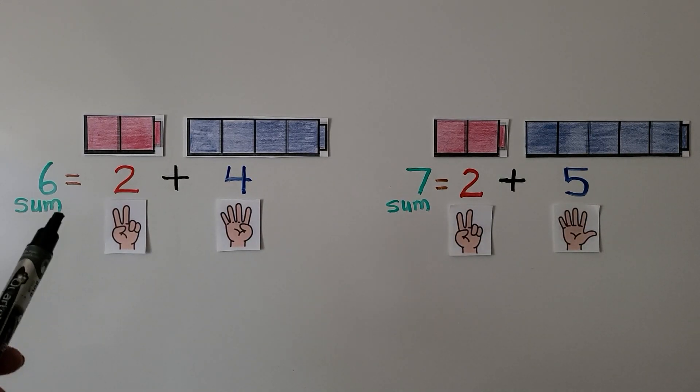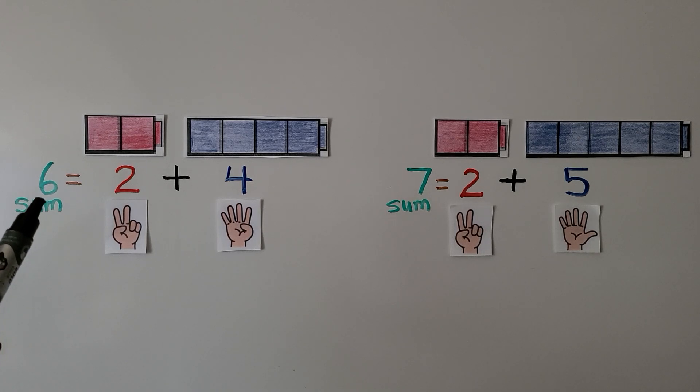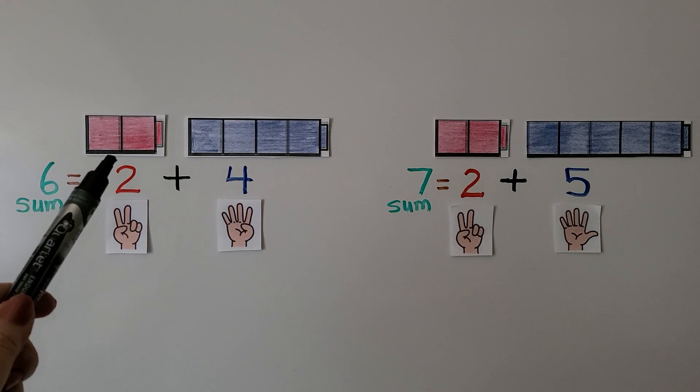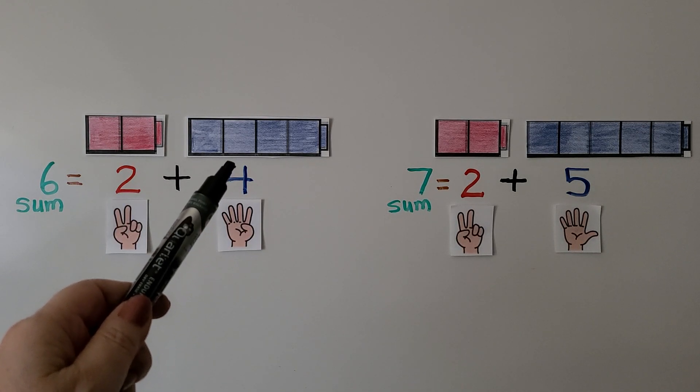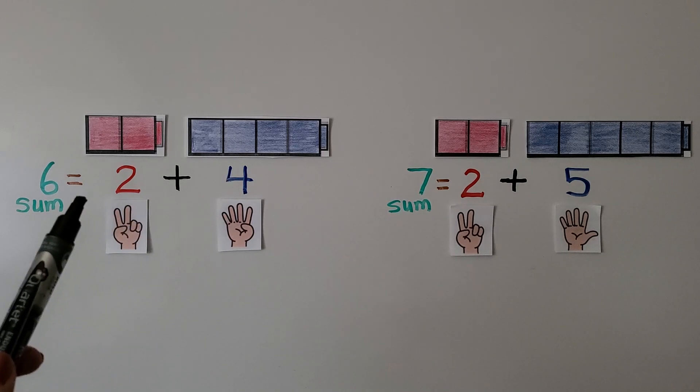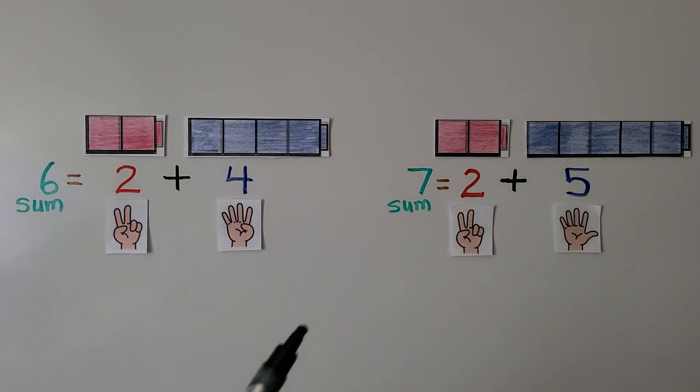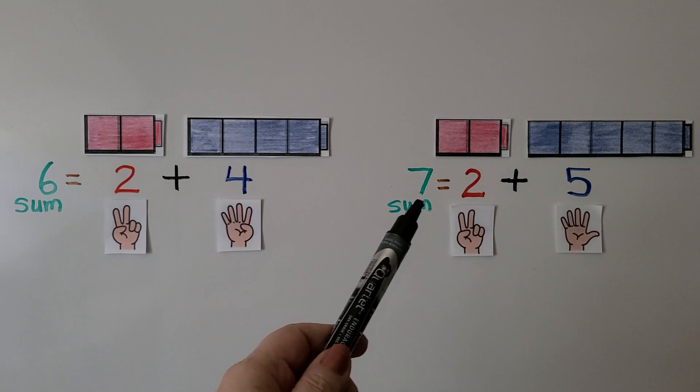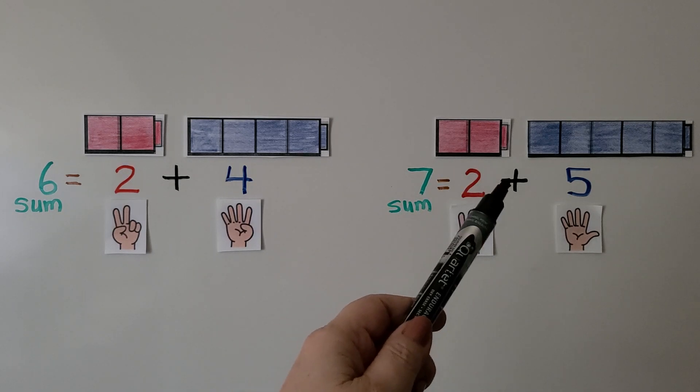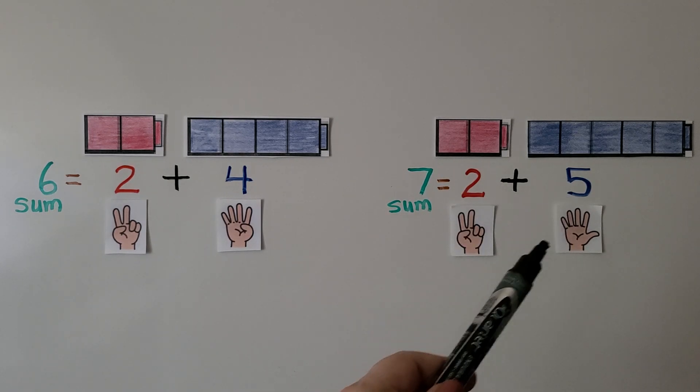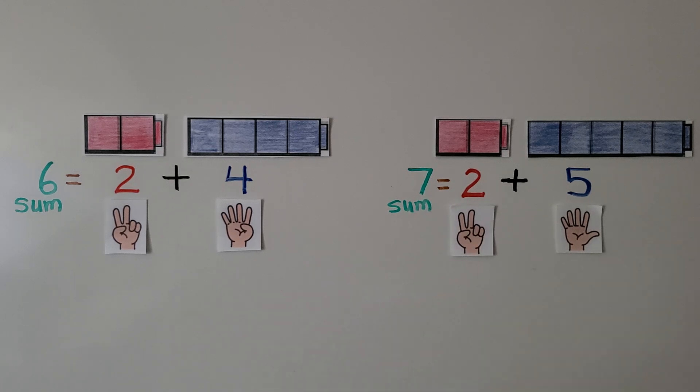We can show 6, the sum, as 2 plus 4 more. 2 plus 4 is equal to 6. We can show 7 as 2 plus 5 more. 2 plus 5 is equal to 7.